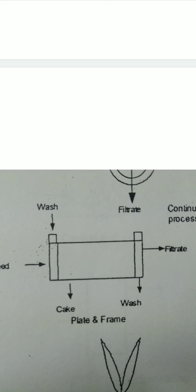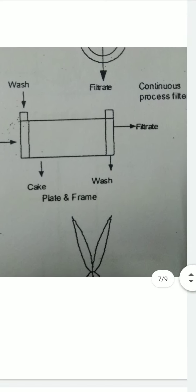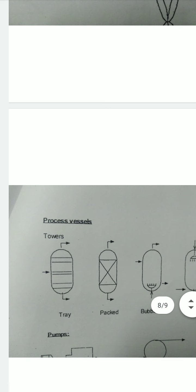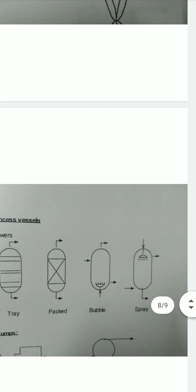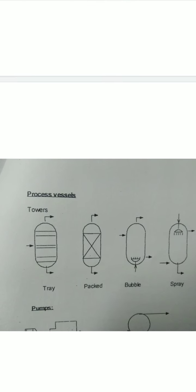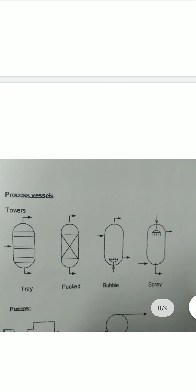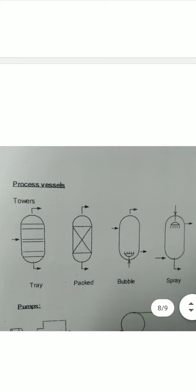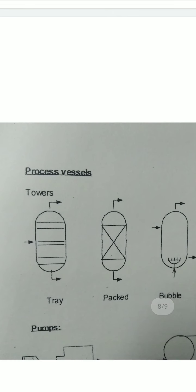There will be process vessels next. There are different types of process vessels with mass symbols. Every type of tower is covered here. Different types include tray vessel, packed vessel, bubble tower, and spray tower. You need to remember all of them. You can refer to the paper and PDFs to remember them.